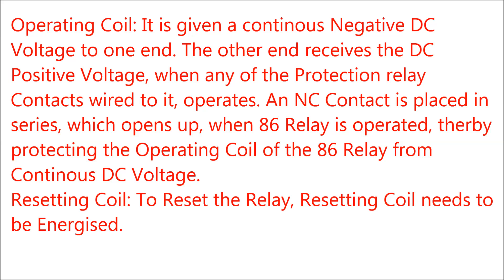The construction of the Master Trip Relay has three parts. One is the operating coil, the second is the resetting coil, and the third are multiple contacts — that is NO and NC contacts. It is given a DC negative to one end and the other end receives the DC positive voltage. When any one of the protection relays operates, an NC contact is placed in series with the operating coil which opens up as soon as the operating coil energizes, so that it prevents continuous DC to the operating coil and thereby prevents burnout of the operating coil.